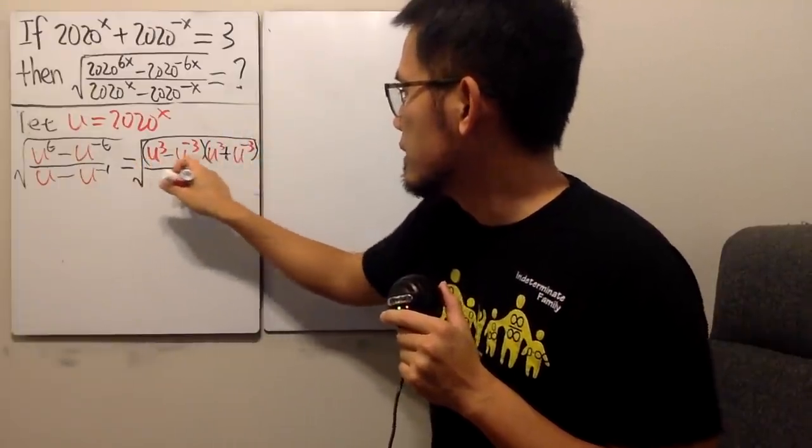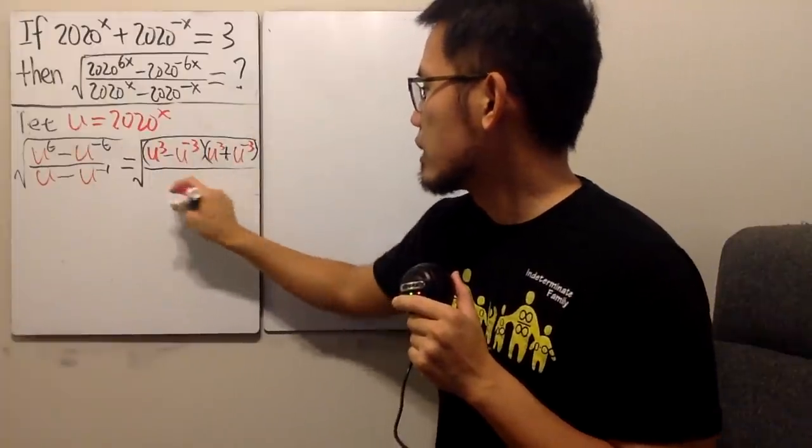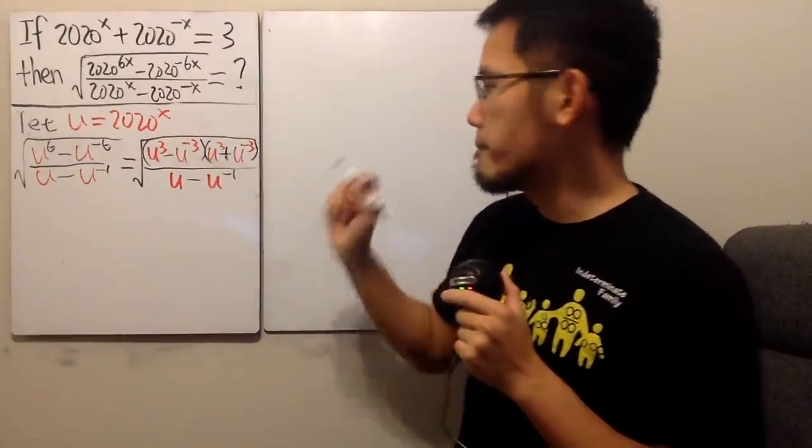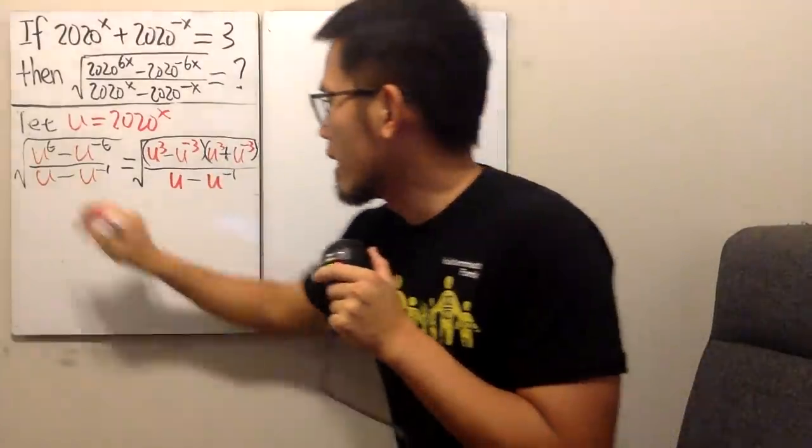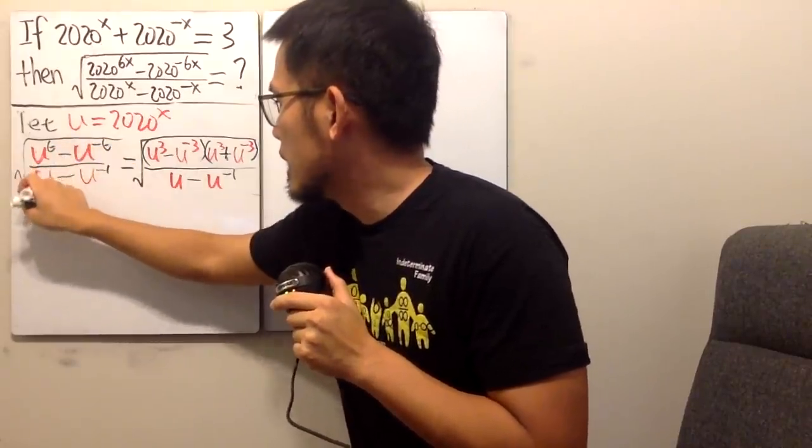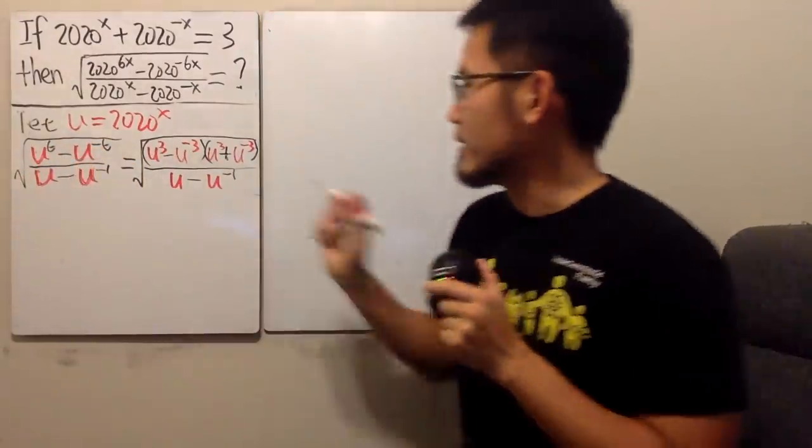All right. And then this is divided by that denominator which is u minus u to the negative one. Pretty good so far. And let me make the u more visible for you guys. Better.